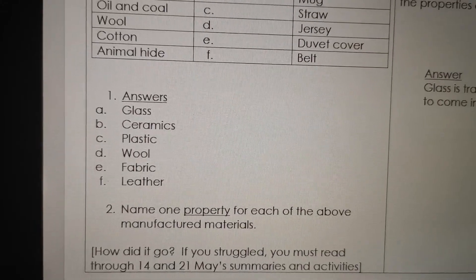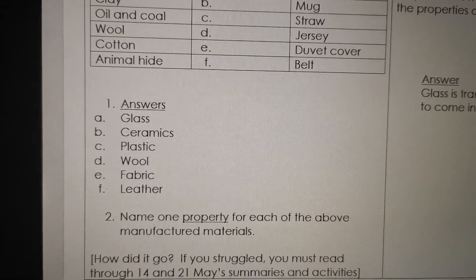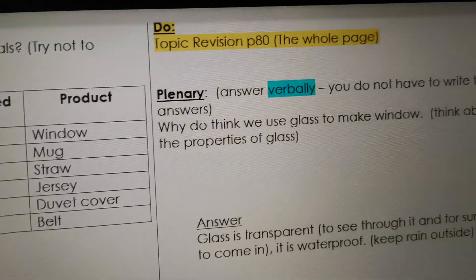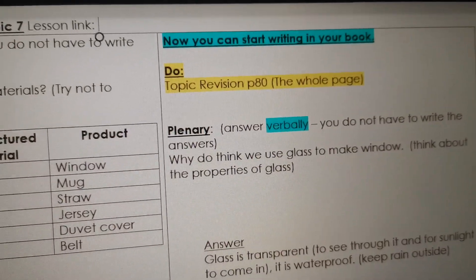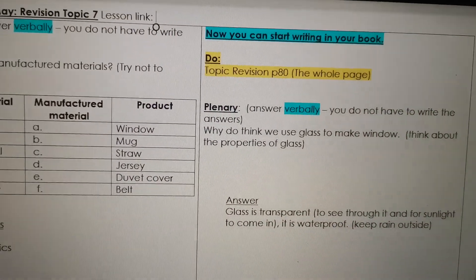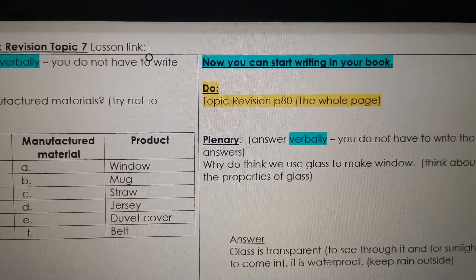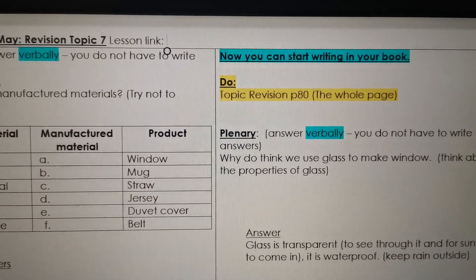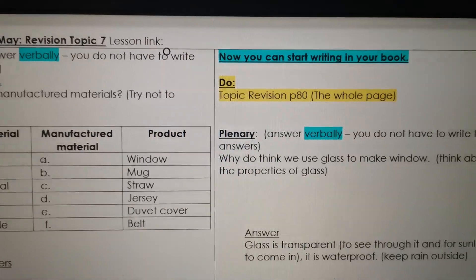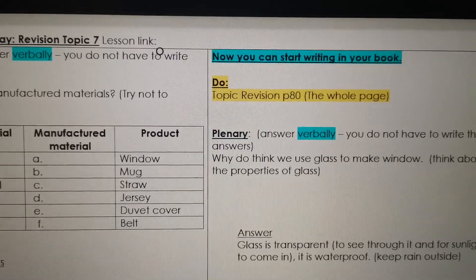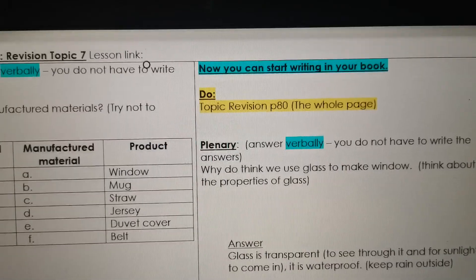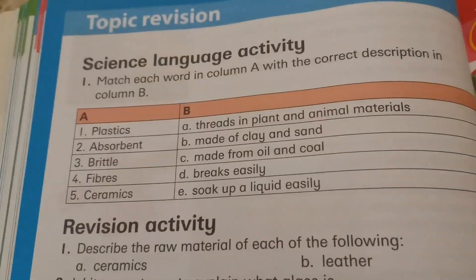Before you start with the topic revision we're going to do today — only now you're going to start in your book. Do the topic revision on page 80 and you're going to do the whole page. We always do the whole topic revision. Let's quickly look at the topic revision — it's on page 80.